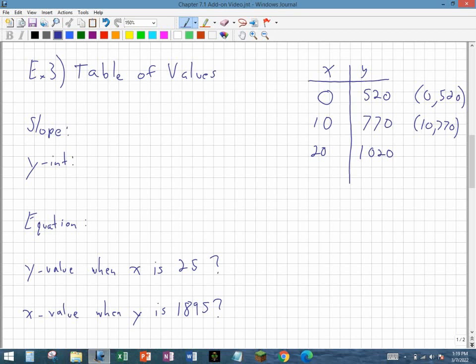For the slope, I can use the slope formula, right? My y2, so my 770, minus my y1, which is my 520, over my x2, which is 10, minus my x1, which is 0.